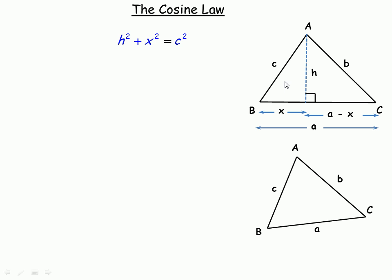Also in this triangle, I'm going to write that the cosine of angle B equals the adjacent side x over the hypotenuse c. X is the adjacent side, c is the hypotenuse, so cosine of angle B equals x over c. Now I'm only writing the cosine ratio — I don't need the sine or tan ratio, because this is the cosine law. If we multiply both sides by c, the c's divide out and we get x equals c cos B.